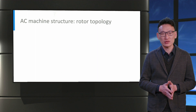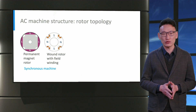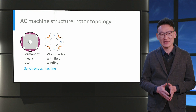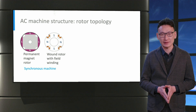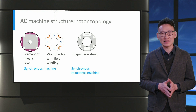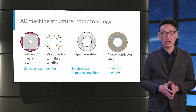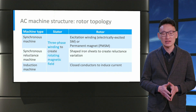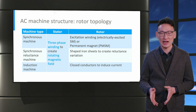Let's move on to the rotor structure of AC machines. For synchronous machines, the rotor can either have permanent magnets embedded in it or electrically excited windings with current flowing through them acting as electromagnets. Synchronous reluctance machines have shaped iron sheets to form a rotor that provides reluctance variation. Induction machines have a closed conductor cage for inducing current. A table here summarizes the stator and rotor structure of the three types of AC machines discussed.